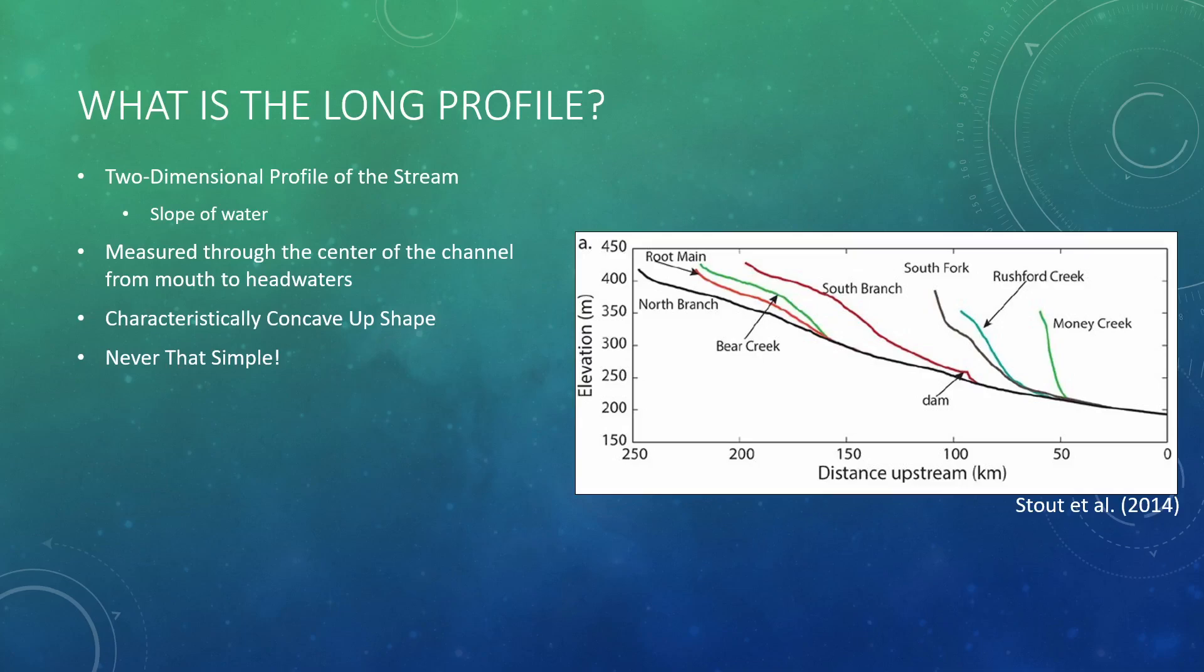On the south branch, circled here, we see a dam that is changing the long profile of the river. We see it kind of acting as a nick point, as we call, or sharp point in the profile.